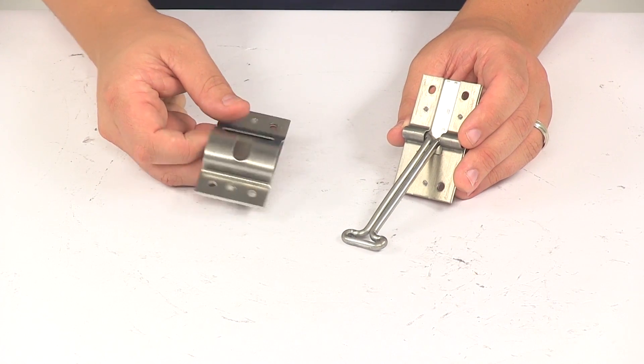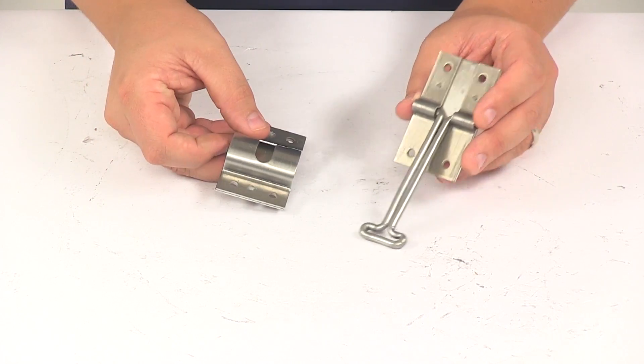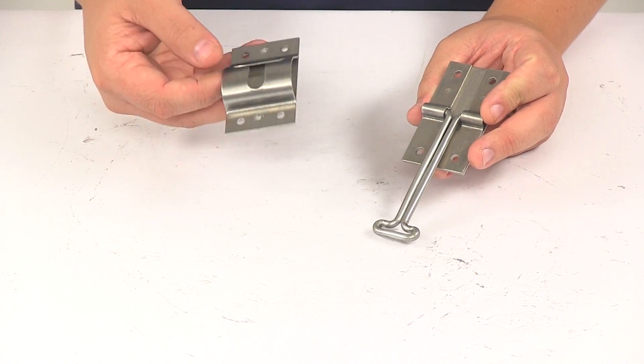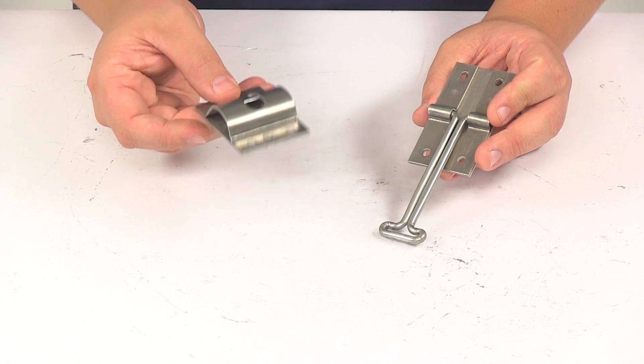One piece is mounted to the side of the trailer, typically this piece right here. The other is mounted to the door, which would typically be this piece right here.